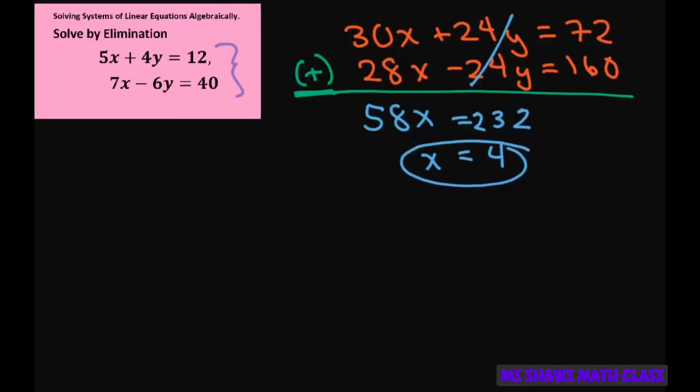That means in our ordered pair we have X is 4, and now we have to find our Y because the solution is where the two lines intersect. We can use either equation here. I'll go ahead and use the first one.